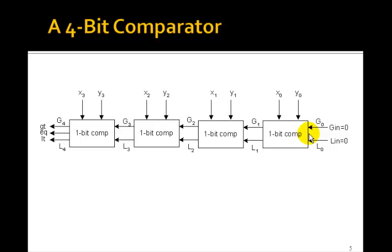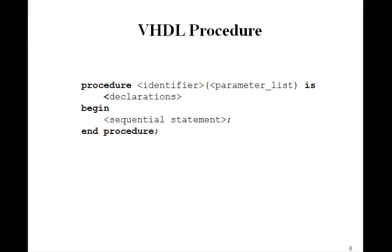So this is going to be our 4-bit comparator, four 1-bit comparators. Now, to do this in VHDL, it looks as if a for-loop might work. Remember, when you go through a for-loop it makes multiple copies of the circuit, and here we want to make four copies of the same thing. So the question is, how can we use a for-loop to do this? And we're going to use a VHDL procedure.